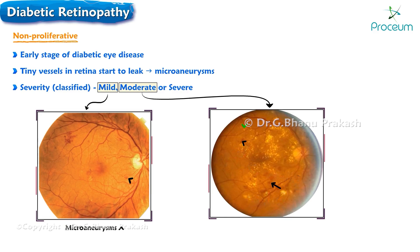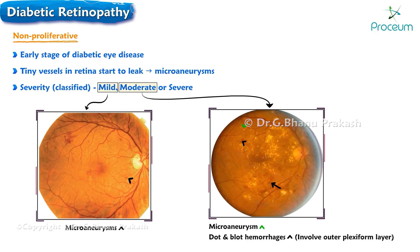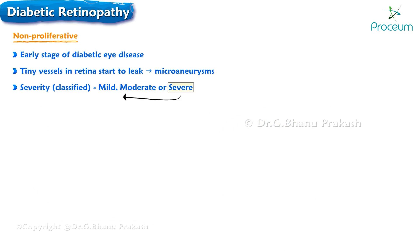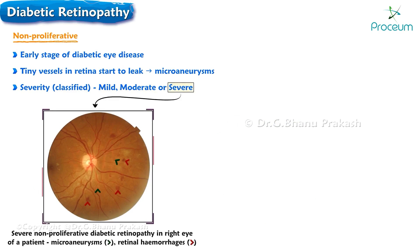As the disease progresses to the moderate stage, additional signs such as hemorrhages and microaneurysms become visible. Dot and blot hemorrhages, which involve the outer plexiform layer, as well as superficial flame-shaped hemorrhages affecting the nerve fiber layer, are observed.